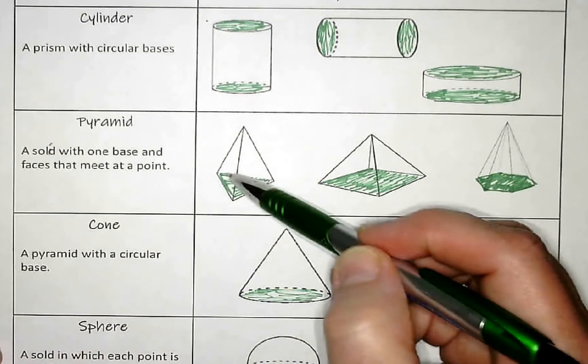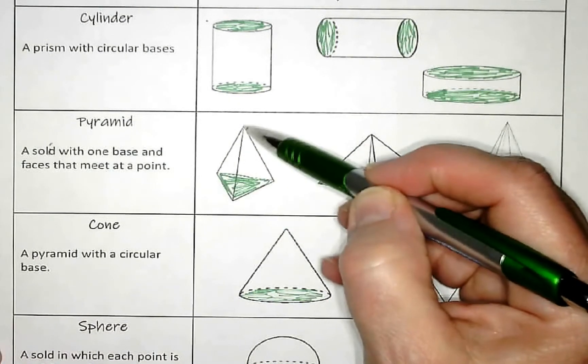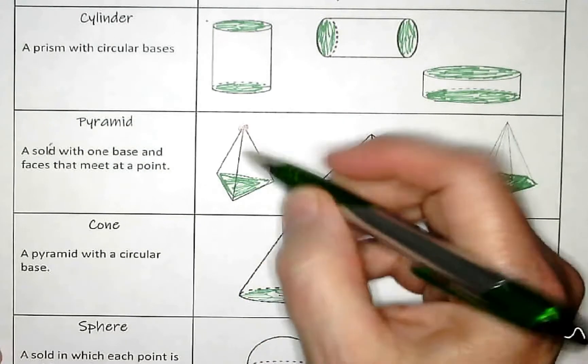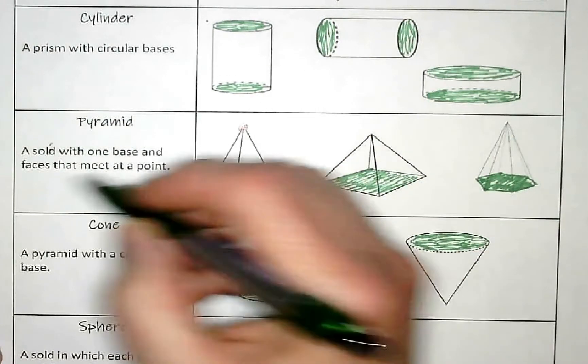But that base, all of those points come up to a single point up here. And the sides are called, looking back on all of these, the sides are called the faces.